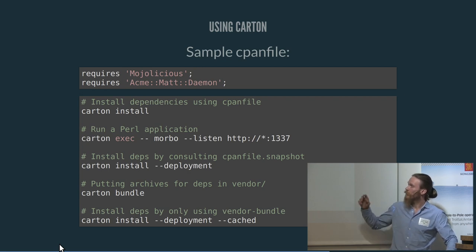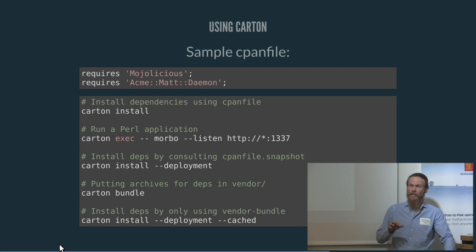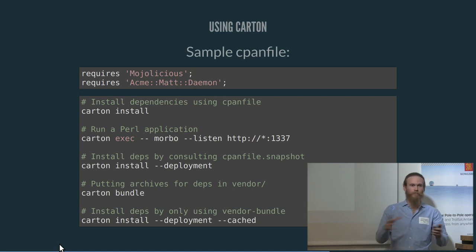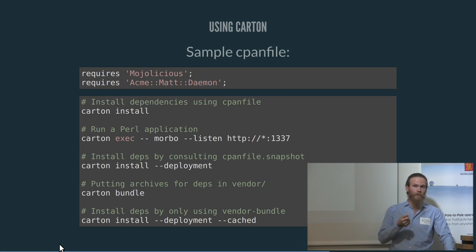You can also do --deployment. When you do --deployment, it will only query the cpanfile.snapshot for versions and will not try to install the newest versions of anything. That's useful when you've pinned all your dependencies and want to stay there. The carton bundle command puts all the CPAN archives for your application into the vendor directory, so you can make an archive of that and ship it off. And lastly, carton install --deployment --cached will not query CPAN for anything and will only use the vendor directory. So it only consults modules on disk upon installation. That's very helpful.